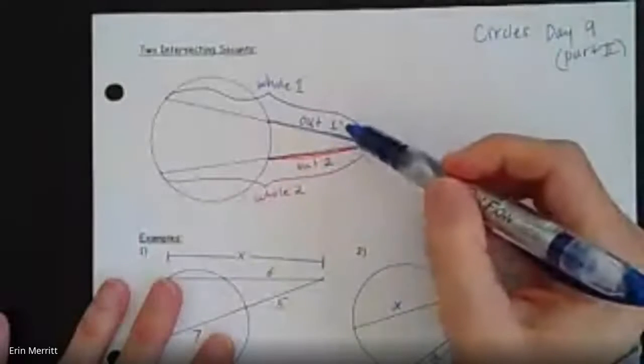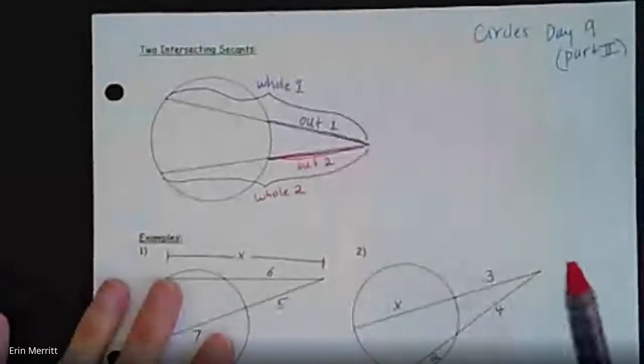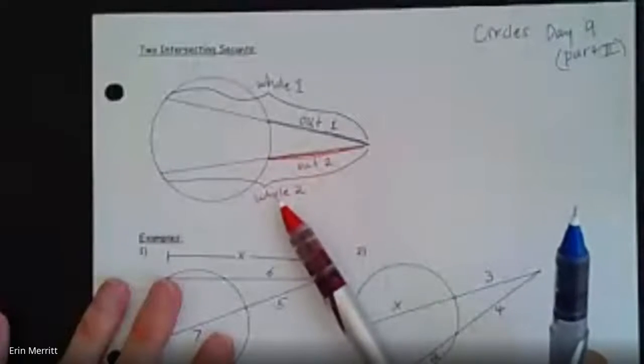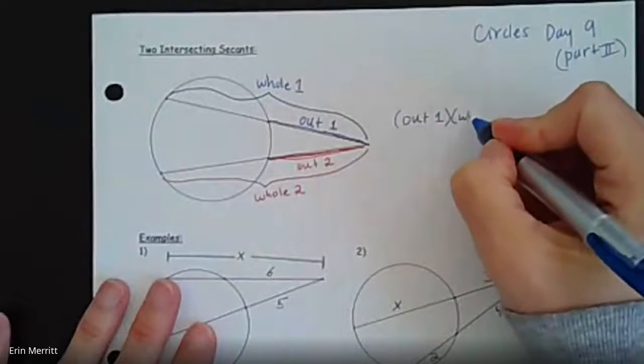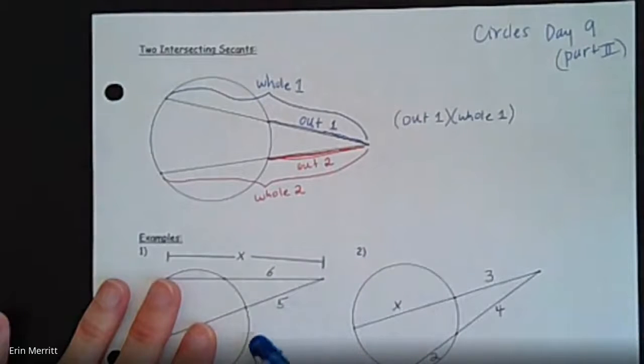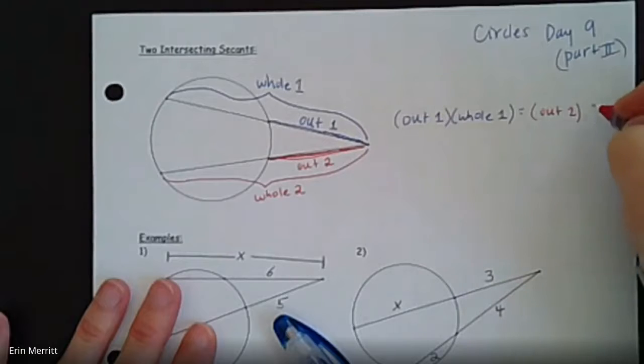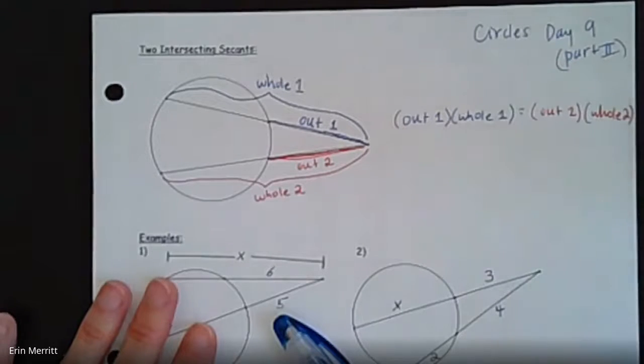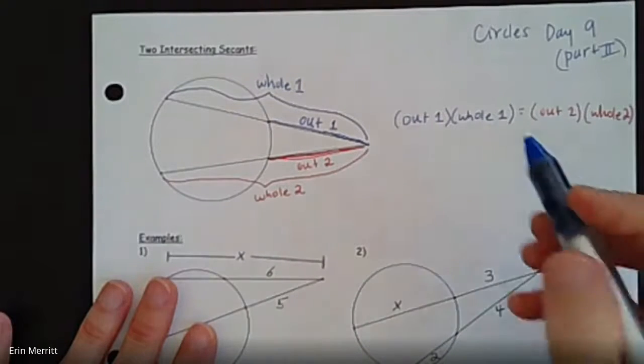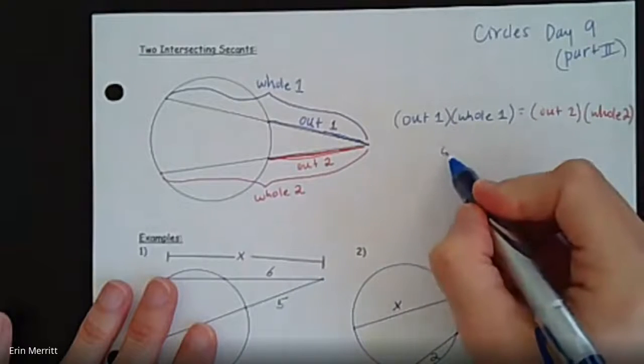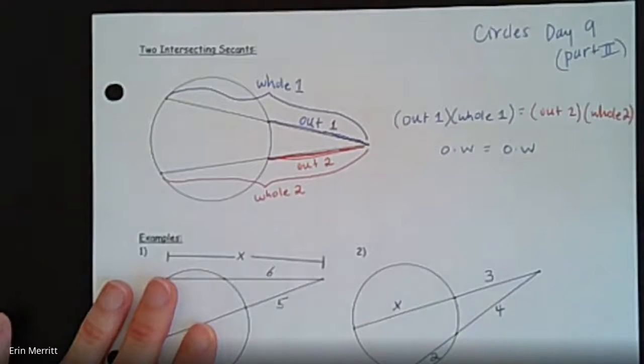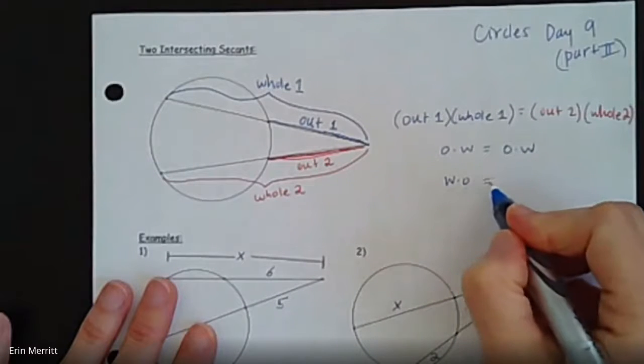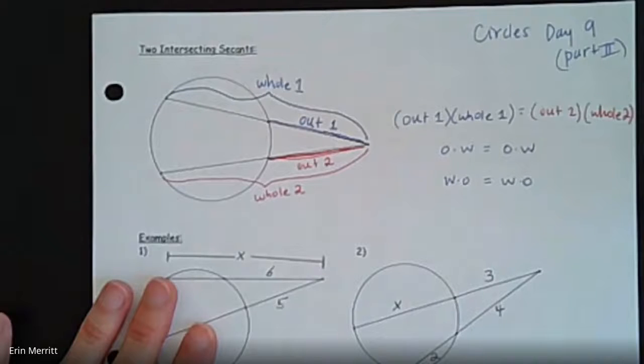How this rule works: it's really similar to the last rule we just looked at. The product of the outside piece of one secant times the whole length is equal to the product of the outside piece of the other secant times its whole length. So I'm going to write it as outside 1 times whole length 1 equals outside length 2 times whole length 2. It's a little bit much to write down, so sometimes you might even see us starting to simplify it to outside times the whole thing equals outside times the whole thing. I've seen it written as O·W = O·W, or sometimes people even flip it around and call it 'whoa whoa'—that's just for entertainment.